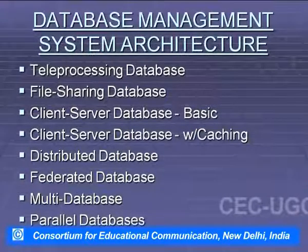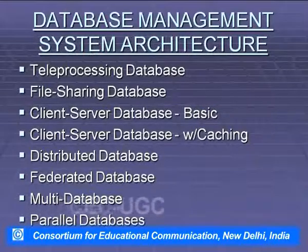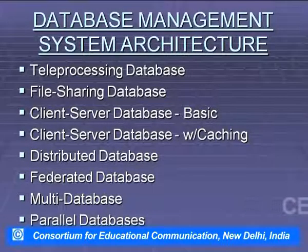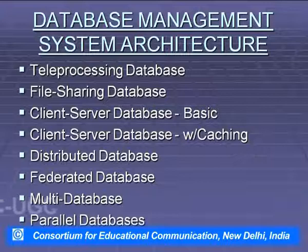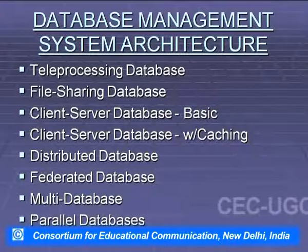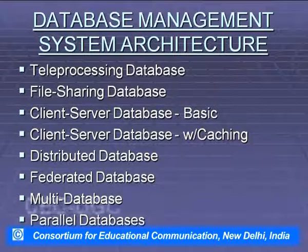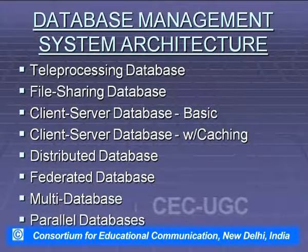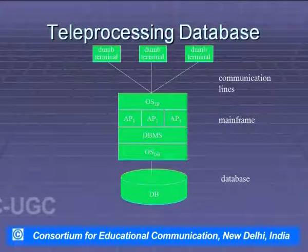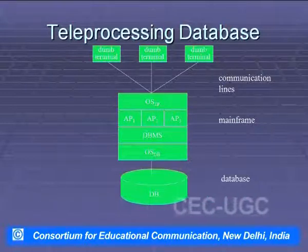Database management system architectures include: teleprocessing databases, file sharing databases, client-server databases (basic and caching), distributed databases, federated databases, multi-database, and parallel databases. In a teleprocessing database, you have different dumb terminals connected via communications lines to a mainframe computer and the database. Different application programs, the DBMS, and the operating system reside on the central computer connected to the main database.